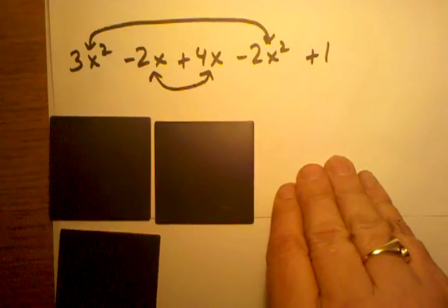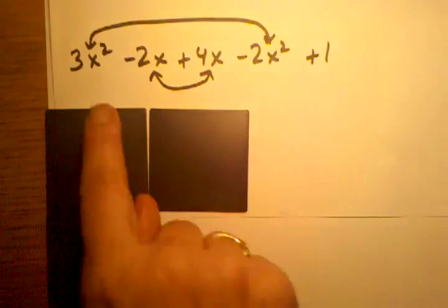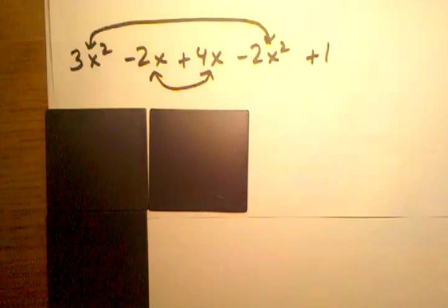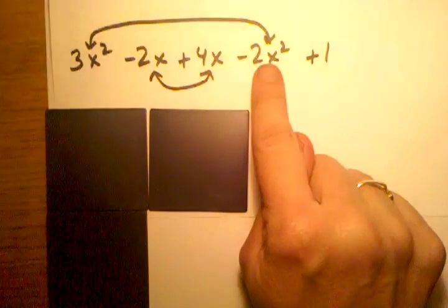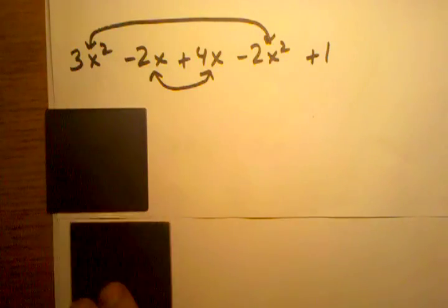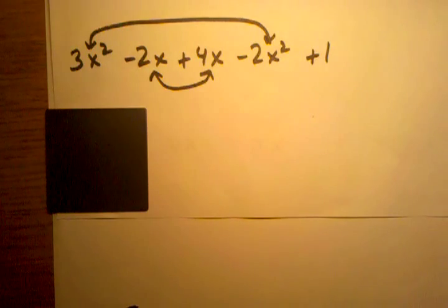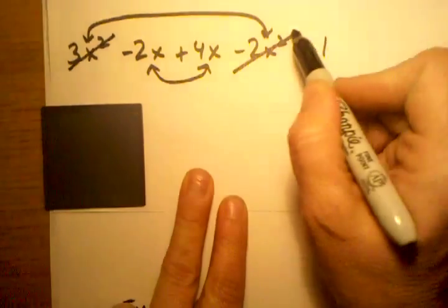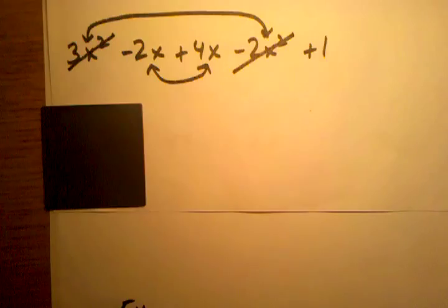Then I have to, if I'm going to combine this one and this one over here, my negative 2x squared, this is telling me I'm taking away 2x squared. So I'm going to take away 2 of these. I'm left with 1x squared. So that's what I have so far in my problem. So basically I've taken care of this term and this term.